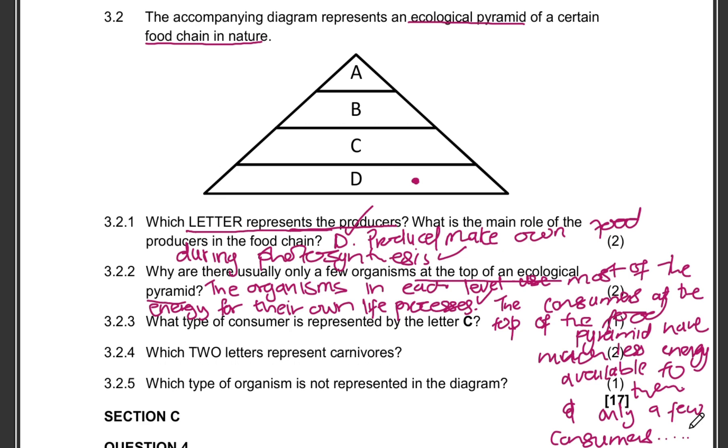What type of consumer is represented by letter C? So there is letter C. What type of consumer is that? Remember in letter D we are having our producer. In letter C, remember we are having organisms that are going to feed on the producers. So letter C can be representing primary consumers that are going to feed on the producers, which is letter D. You can even say herbivores. You can be specific and say these are herbivores, or you can even have omnivores, because omnivores do eat plants.